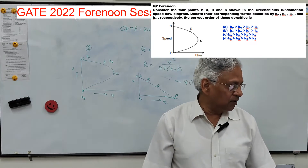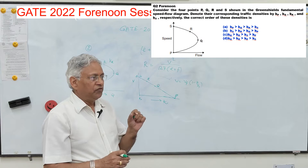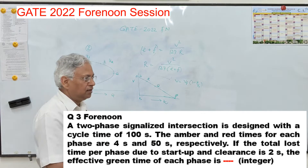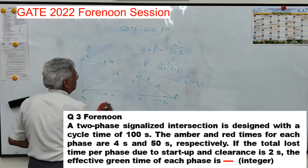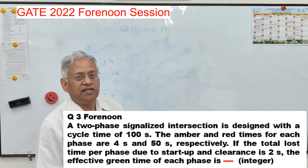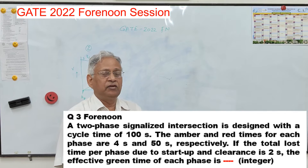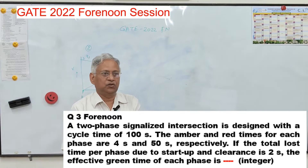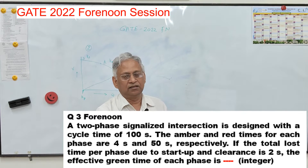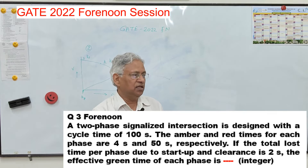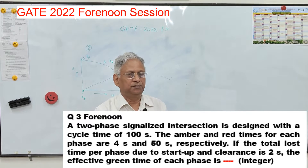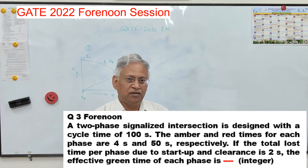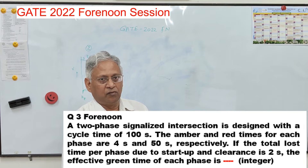The third question: a two-phase signal controlled intersection is designed with a cycle time of 100 seconds. The amber and red times for each phase are 4 seconds and 50 seconds respectively. If the total loss time per phase due to startup and clearance is 2 seconds, the effective green time for each phase is to be calculated.